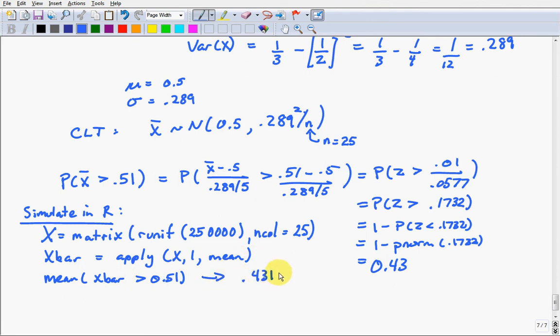So, what this is doing is this part here is 1 if x bar is greater than 0.51 and 0 otherwise. We're going to get a vector of 10,000 zeros and ones. And the average of those zeros and ones will be the percentage of times this happens. And you'll notice that that's basically the same as what we got using the central limit theorem. Which is reassuring because it means we got the right answer.